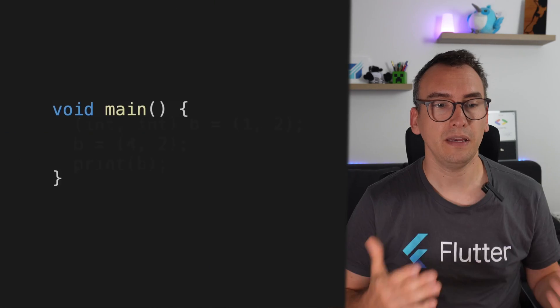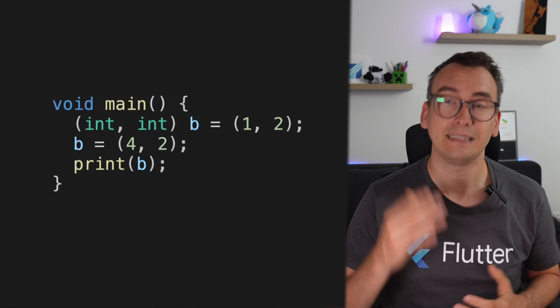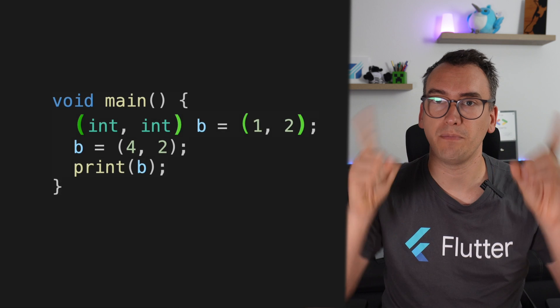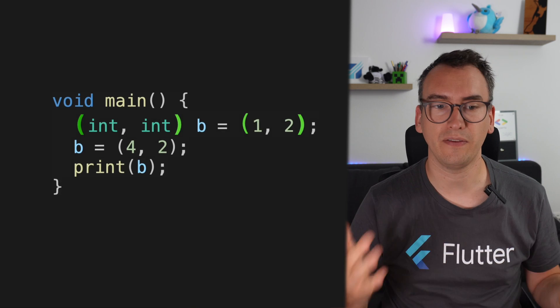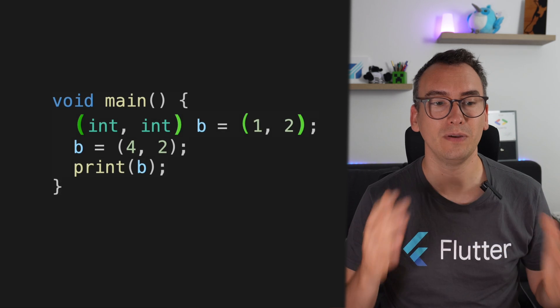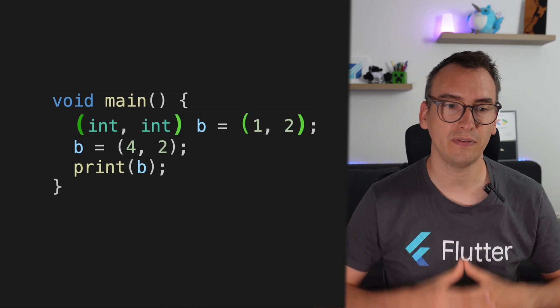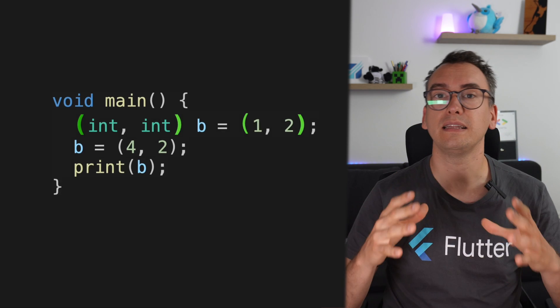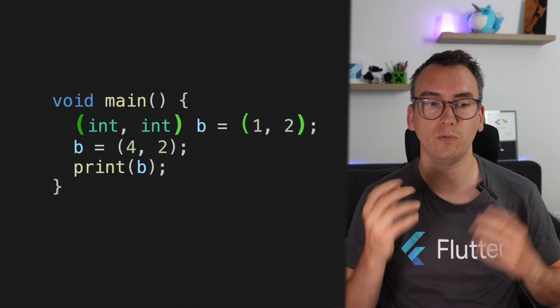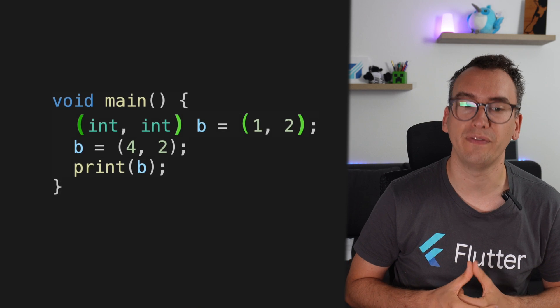Starting with anonymous: you can pass records into variables and they don't have their own name, unlike classes. That gives us the option to pass them in variables. You can directly see the new syntax where you have parentheses enclosing your values, and the declaration contains the types of the values in those parentheses.